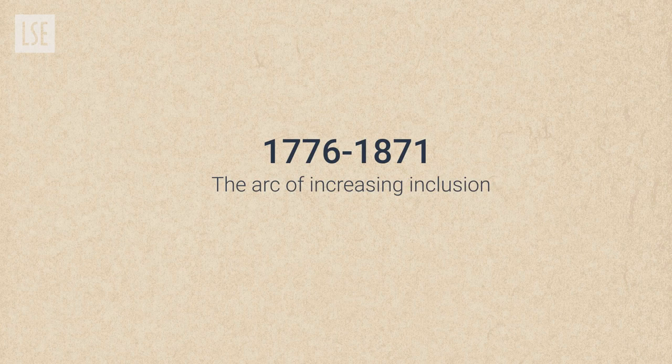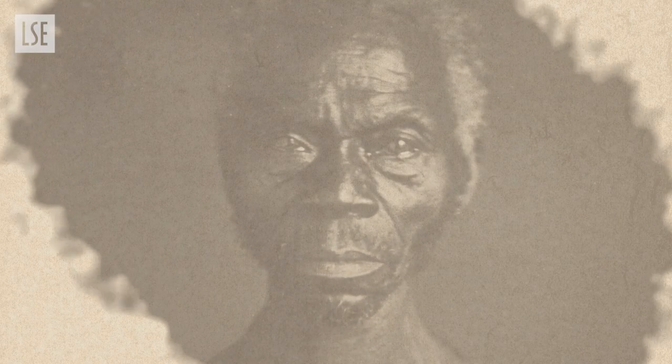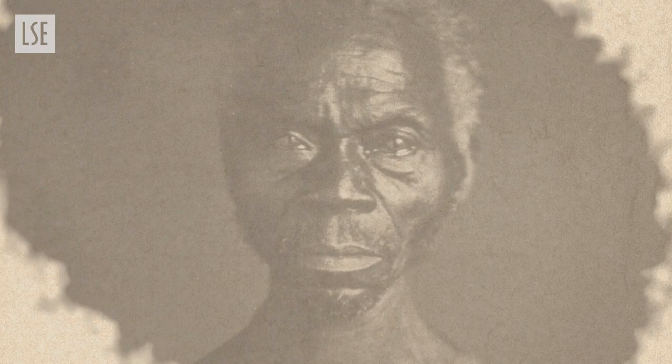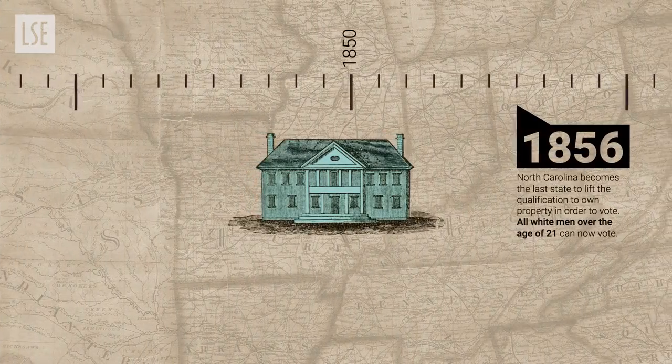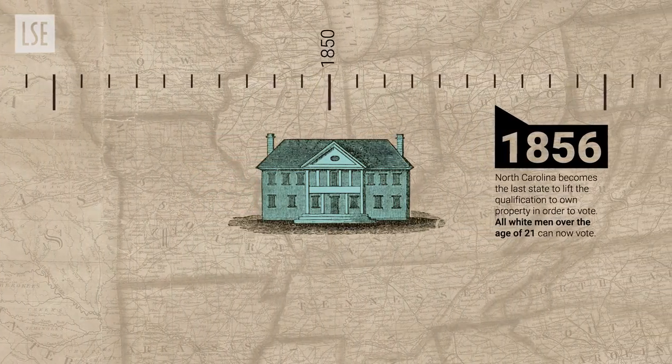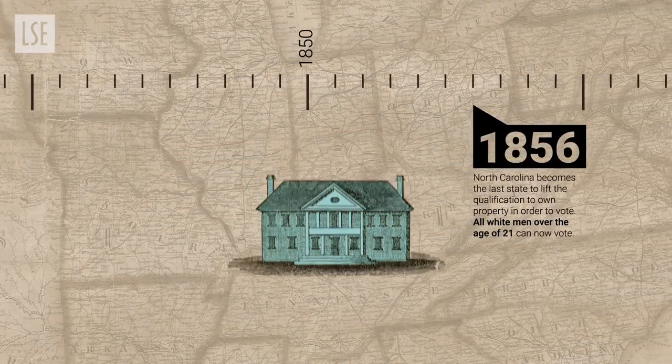One way to think about the history of voter eligibility in the US is the arc of increasing inclusion. The first restriction lifted was the property restriction, and between the 1790s and 1856, when the last such exclusion was removed, all white men over 21 were eligible to vote.